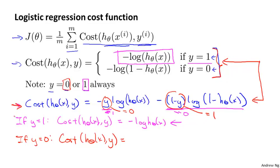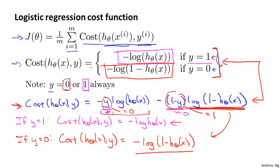And so the cost function simplifies to just this last term here, because the first term gets multiplied by 0 and disappears. So we're just left with this last term, which is minus log 1 minus h of x. And you can verify that this term here is just exactly what we had for when y is equal to 0.